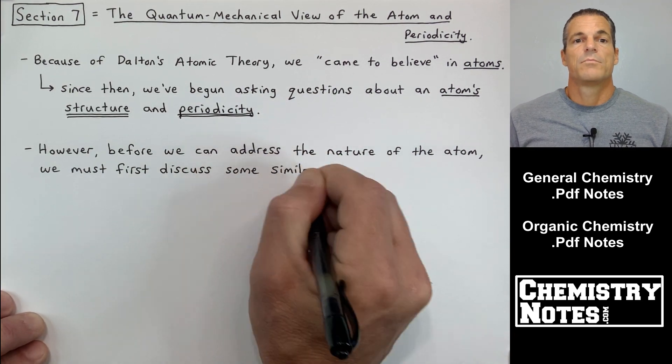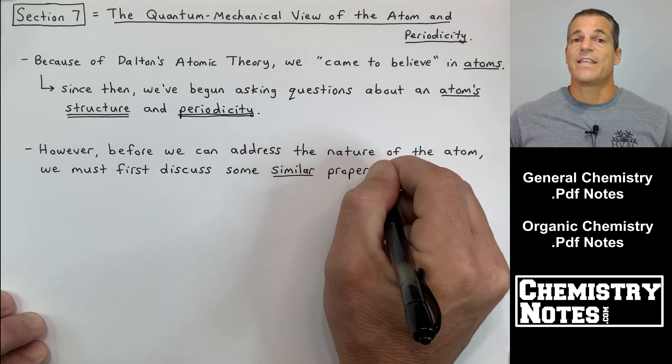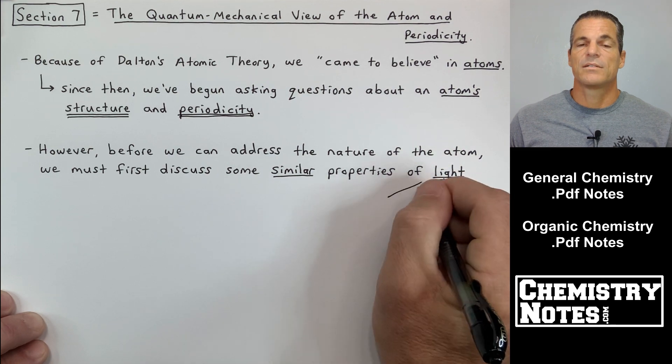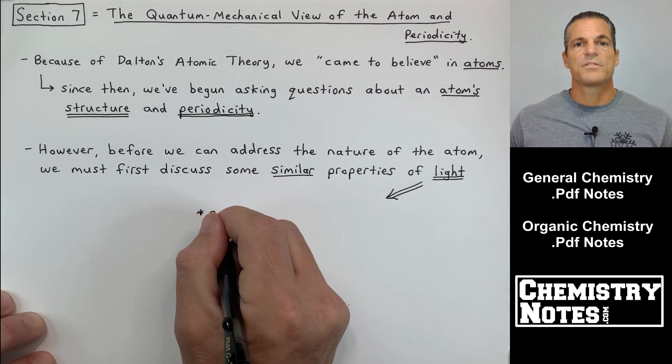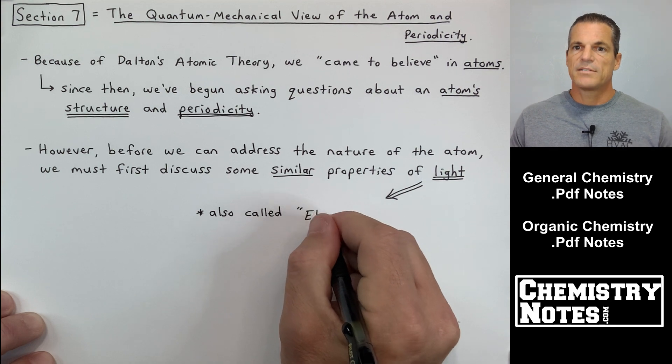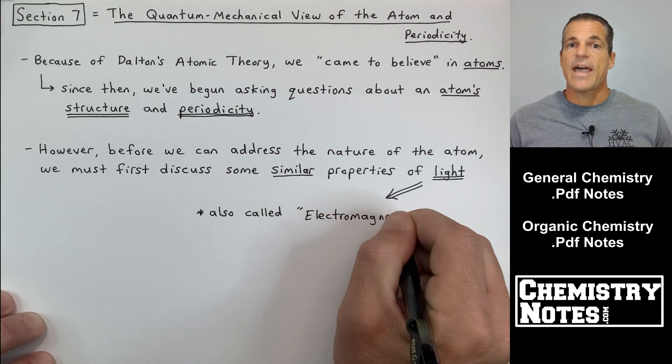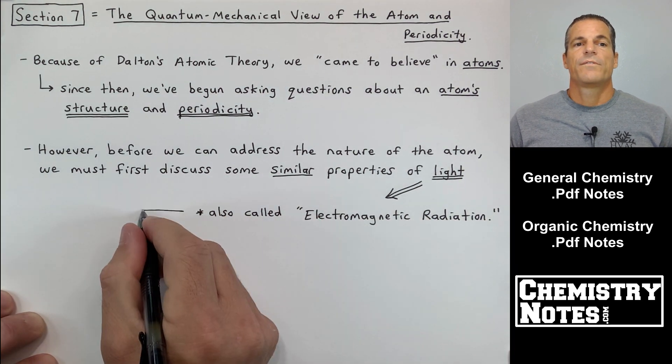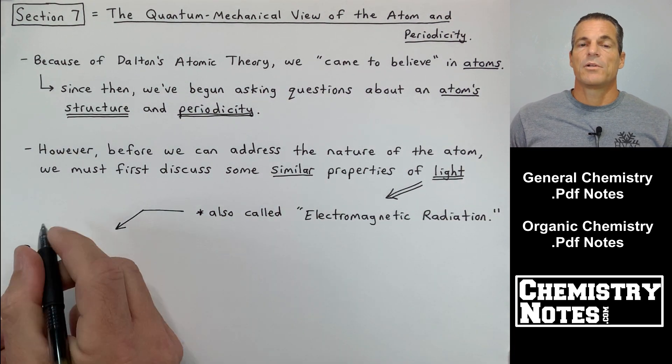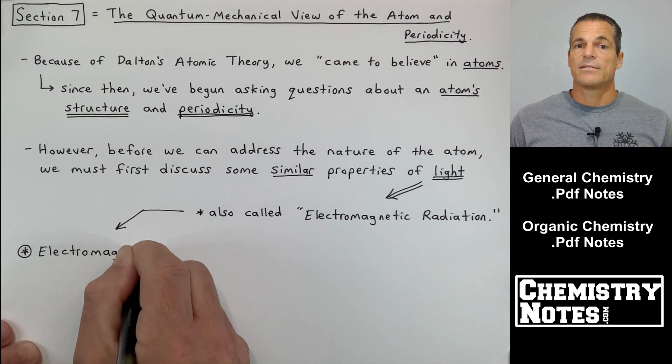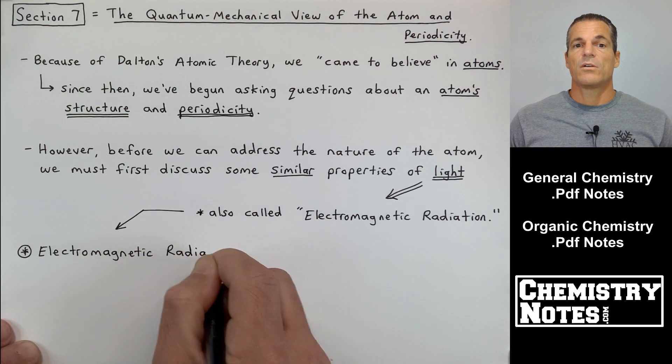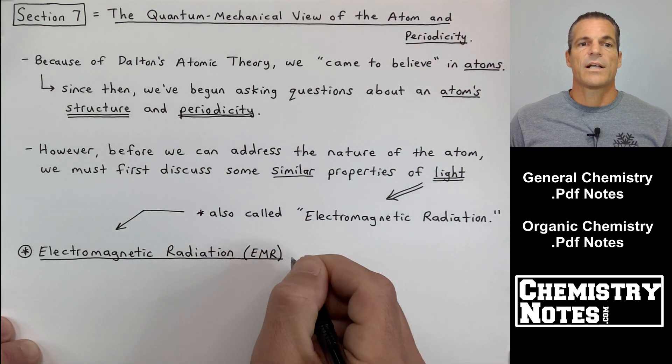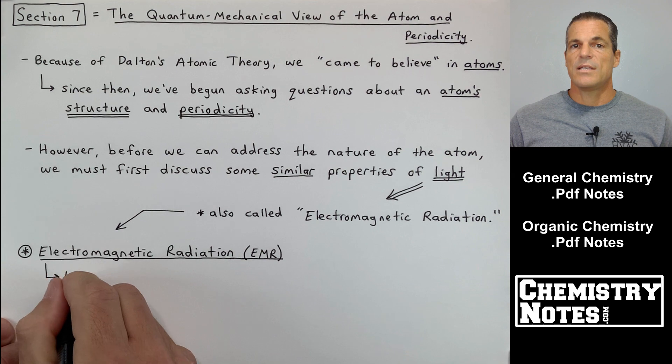However, before we can address the nature of the atom, we must first discuss some similar properties of light. Once we understand these properties of light, we can then translate them into atoms and see how atoms behave this way also. Now light is also called electromagnetic radiation, EMR.